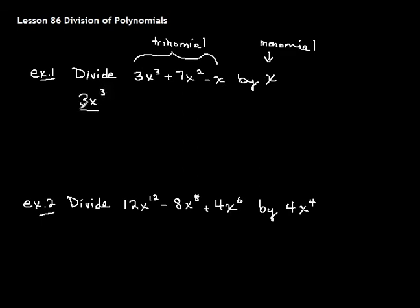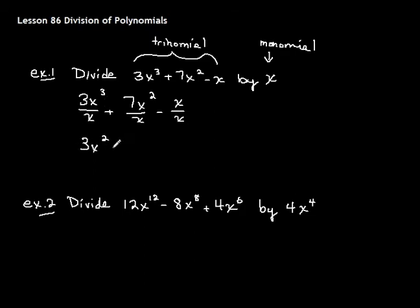3x cubed over x, plus 7x squared over x, minus x over x. Now you have just three little problems to do. The x — you subtract the exponents, so you get 3x squared. Or you can think of it as crossing out one of the x's. Plus 7x. And anything over itself is just 1. So that's how you do the first one — you should feel pretty good about that.